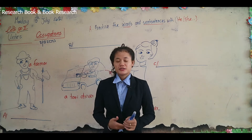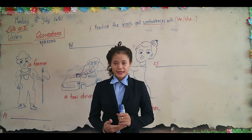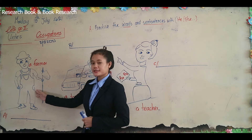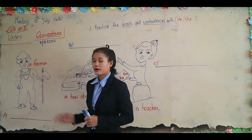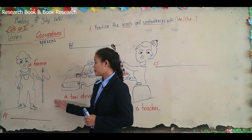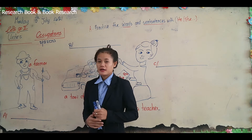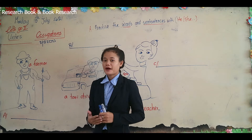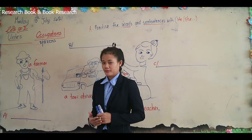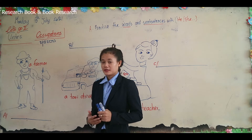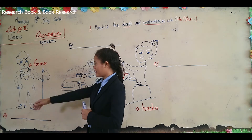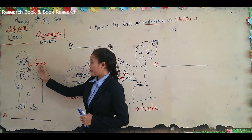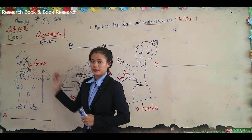Look at the board, all together. The first picture is a farmer. A farmer is someone who does farming with farmland. Okay, again: a farmer.